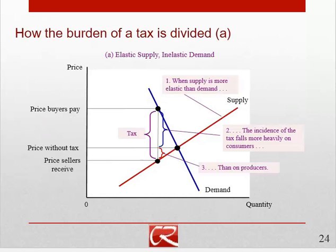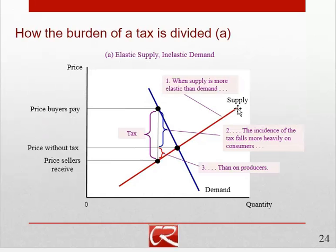Graphically, we think of the tax as driving a wedge between the price buyers pay and the price sellers get to keep. If you started sliding a wedge between these two, because the demand curve is steeper, you'd start sliding up faster than you'd start sliding down on the supply curve. So in this case, with a steep or inelastic demand curve and a flat or elastic supply curve, it's the buyers who suffer the majority — but not all — of the burden of the tax.